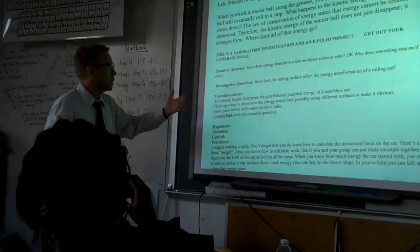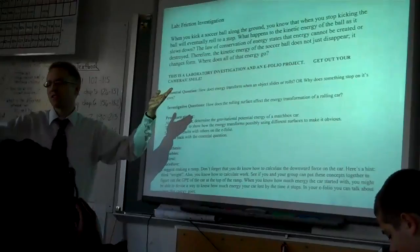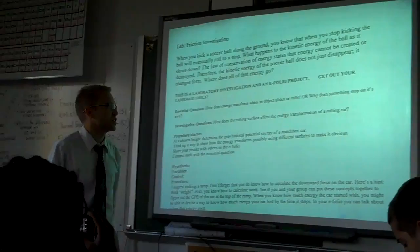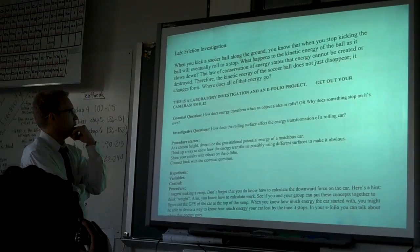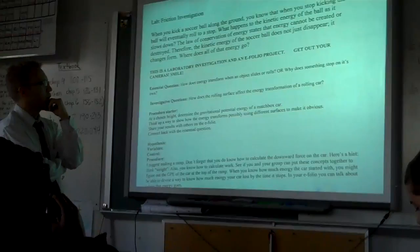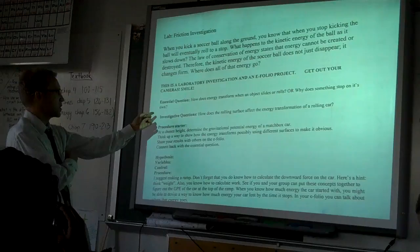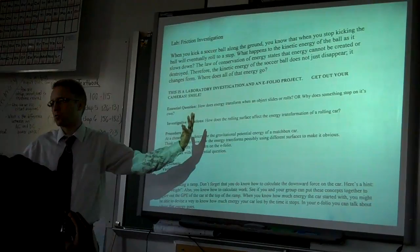So, I'm looking at this essential question. I'm thinking, I don't really need to know about it because it's like the last thing I'm going to do. It's what I'm going to reflect on after I've done the investigation. It says, how does energy transform in an object slides and rolls? Or, why does something stop on its own? I look at the two questions, and I'm trying to figure out what the difference is. And it occurs to me that something's going to stop on its own if all of its energy transforms. So, as I think that through, I realize they're really the same question. I can answer either of them on my e-folio, and the answer would be the same.